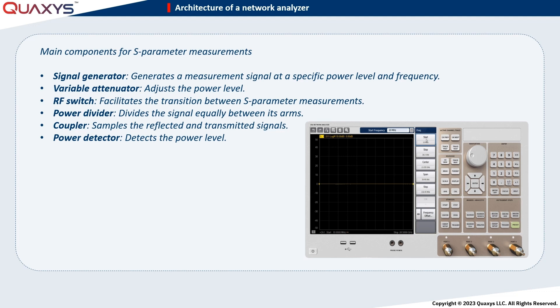Let's begin with signal generation. The signal generator serves to generate a measurement signal at a specific power level and frequency. This generator sweeps across the frequency range required for the measurement. Additionally, a variable attenuator is employed to adjust the power level.